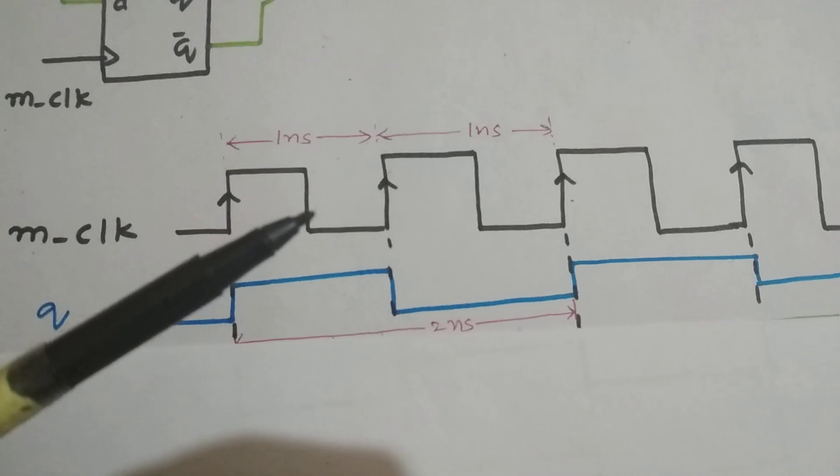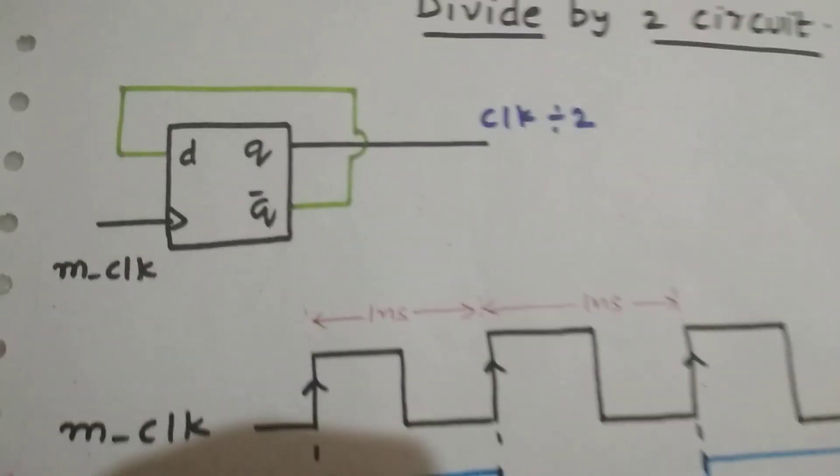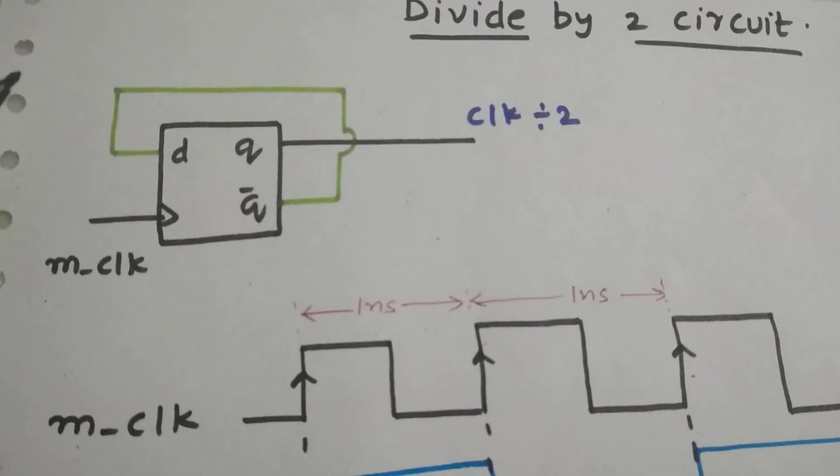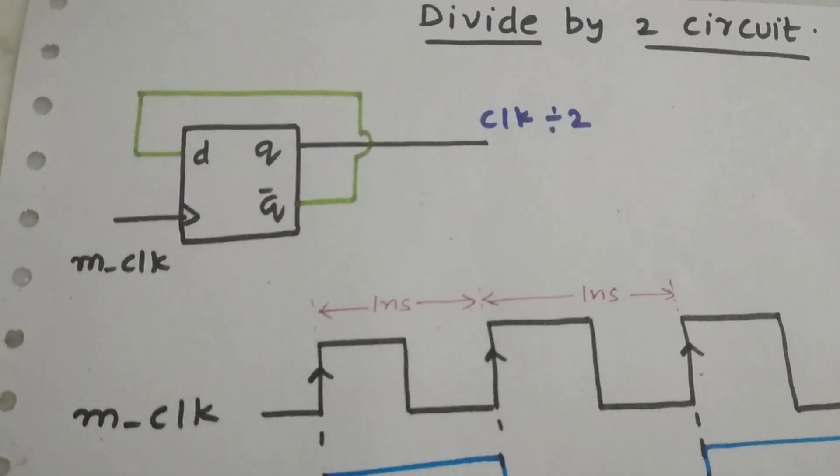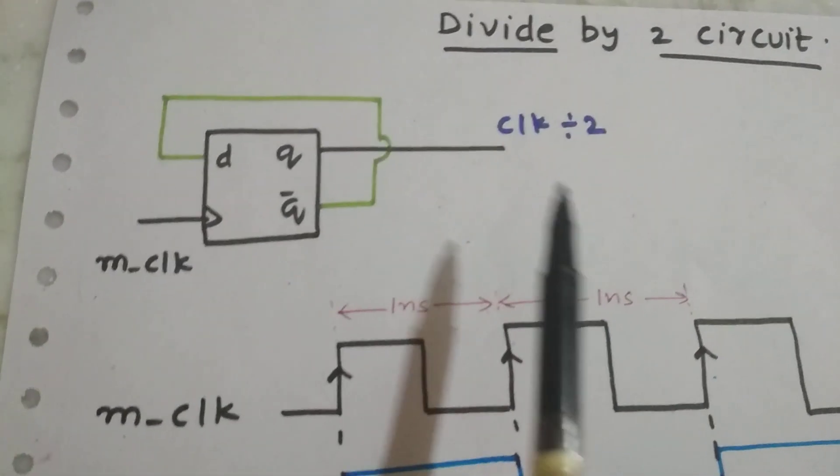It's so simple. This is the circuitry which we are going to use to get our generated clock, clock divided by 2.